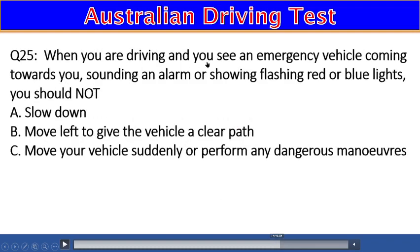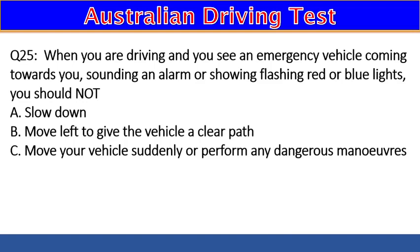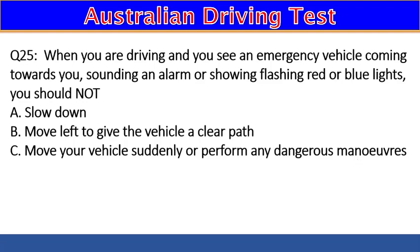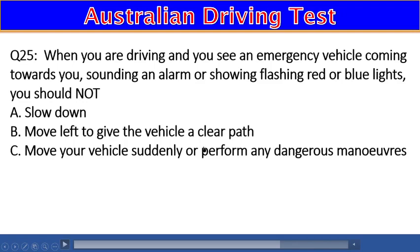Question 25: When you see an emergency vehicle coming toward you sounding an alarm and showing flashing red and blue lights, what should you NOT do? A) Slow down, B) Move left and give the vehicle a clear path, C) Move your vehicle suddenly and perform any dangerous maneuvers. The right answer is C — you should not move suddenly or perform dangerous maneuvers.